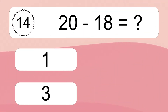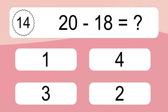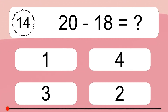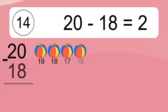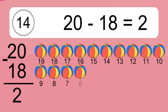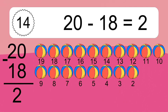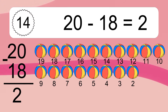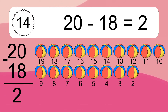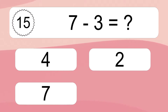20 minus 18 equals what? 20 minus 18 equals 2. Let's count it: 19, 18, 17, 16, 15, 14, 13, 12, 11, 10, 9, 8, 7, 6, 5, 4, 3, 2. 7 minus 3 equals what?